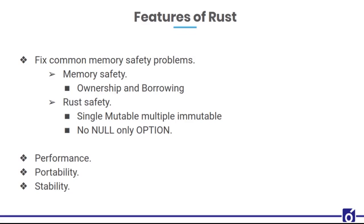Rust also has features like single mutable references, multiple immutable references, and no null — only options. The Rust language has no nulls; it has only options. Either we have Some or None.